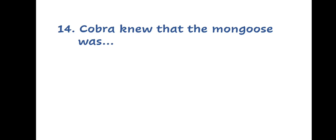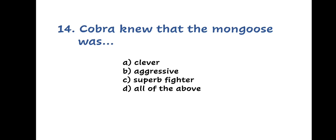Question 14. Cobra knew that the mongoose was: A. Clever, B. Aggressive, C. Super fighter, or D. All of the above.